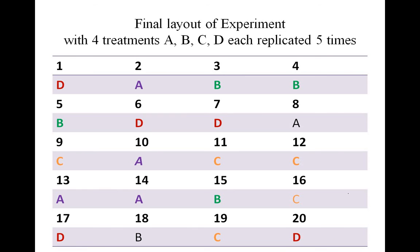This is the final layout of the experiment after assigning ranks and treatments. Four treatments A, B, C, D are replicated five times. You can observe here that each treatment is shown with a different color. It's important to note that each treatment is replicated equal times and is randomized in the final layout.